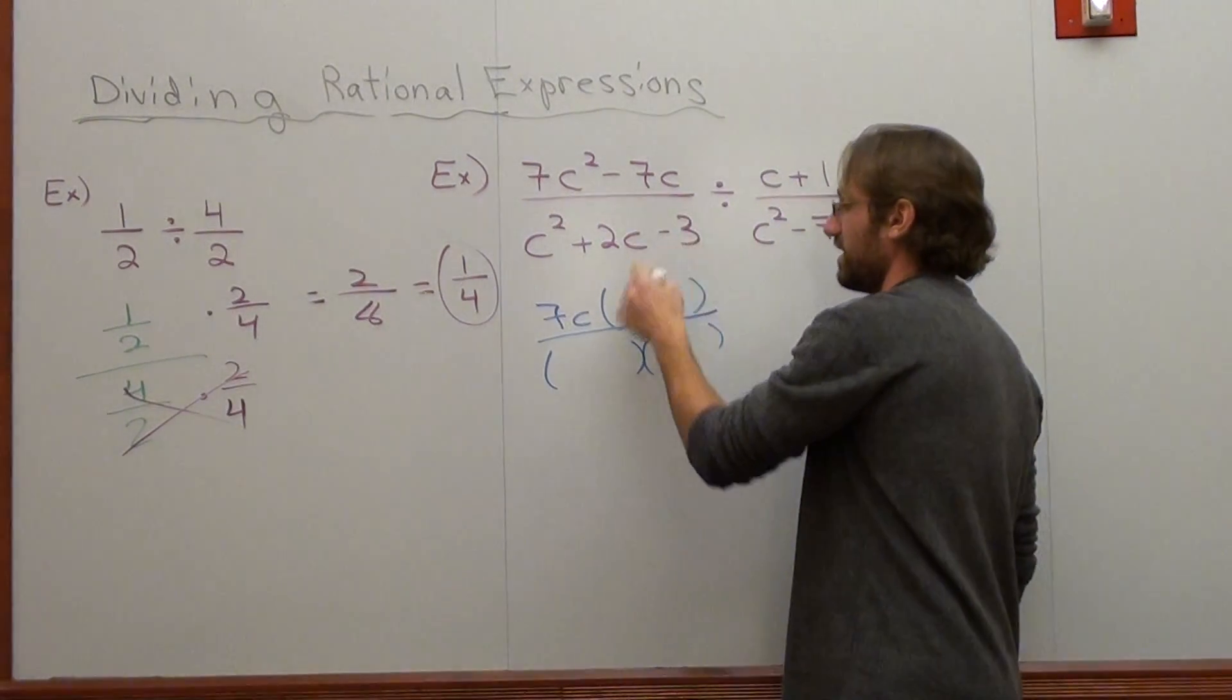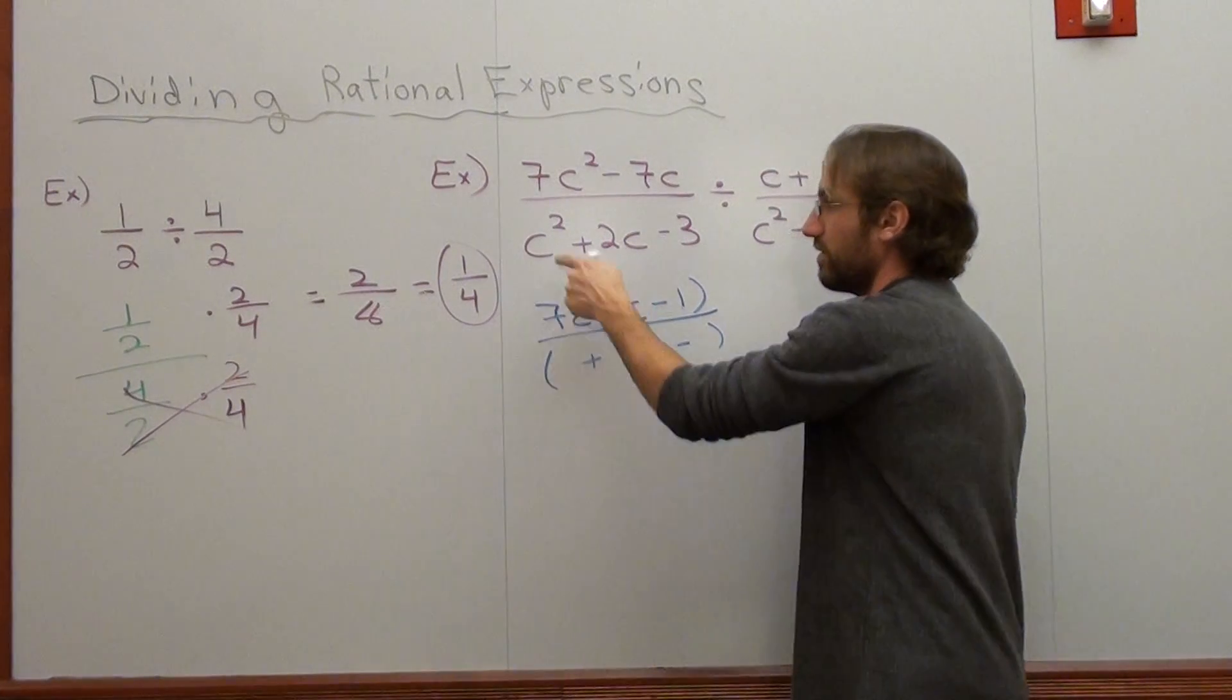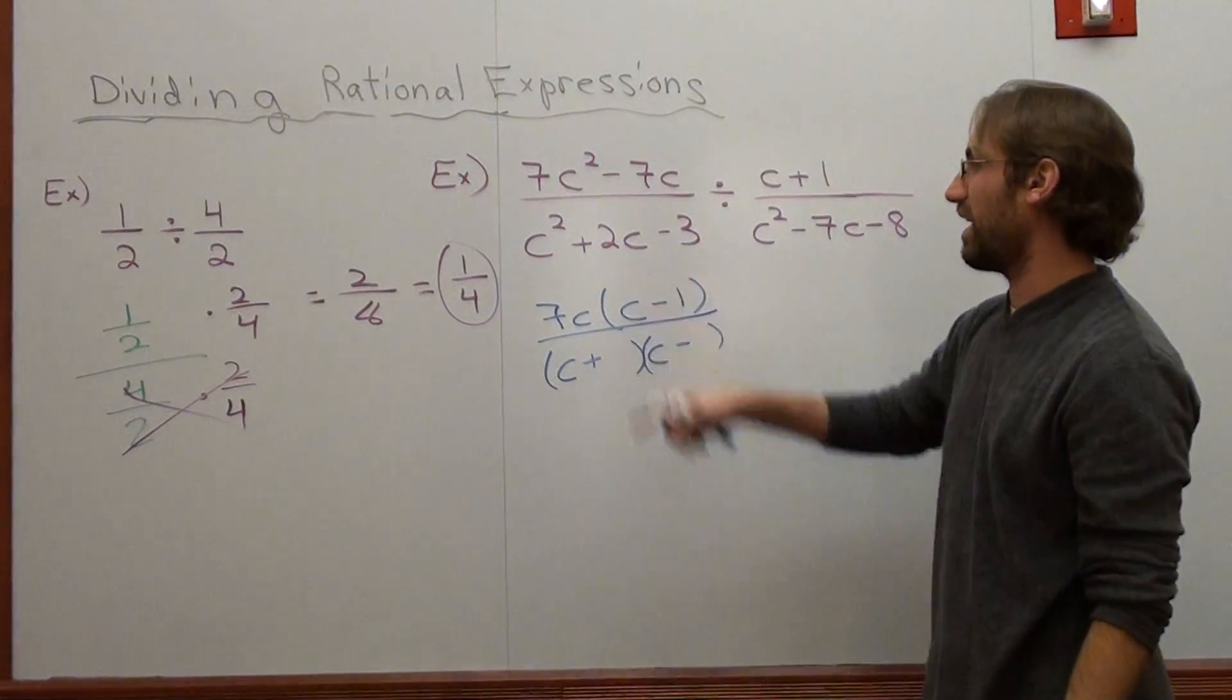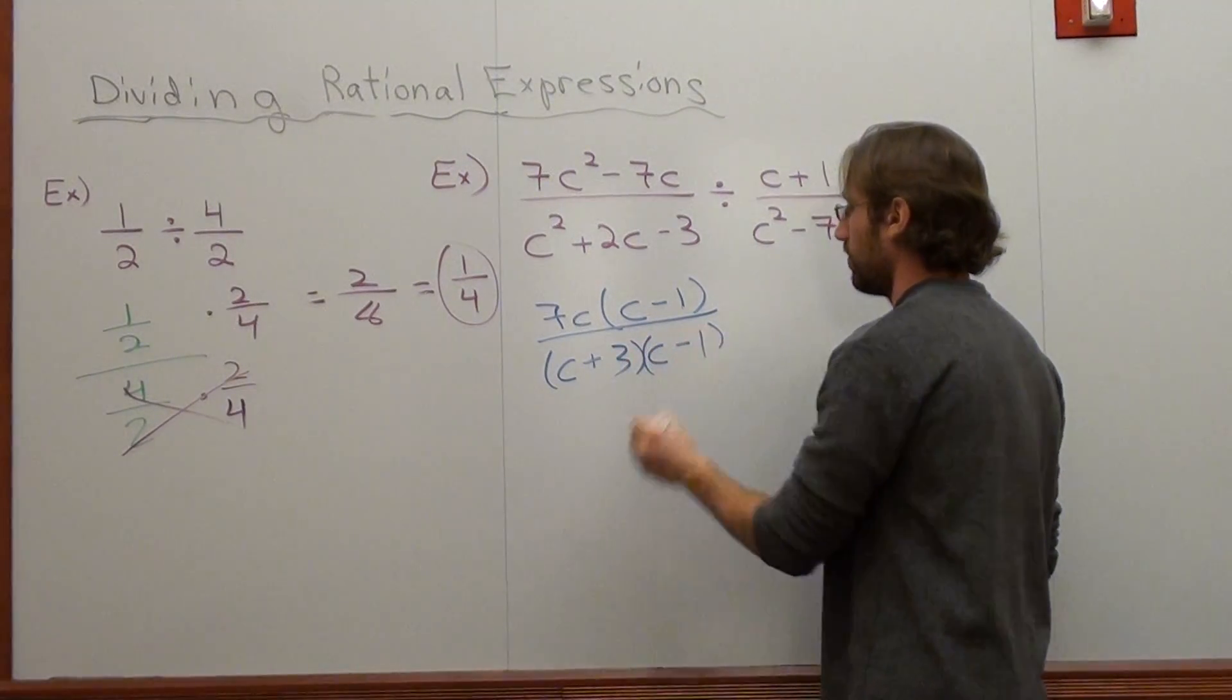That's a negative, so it's a positive negative. c times c is c². What times what is negative 3, but it adds up to be 2c? That would be 3 and 1.